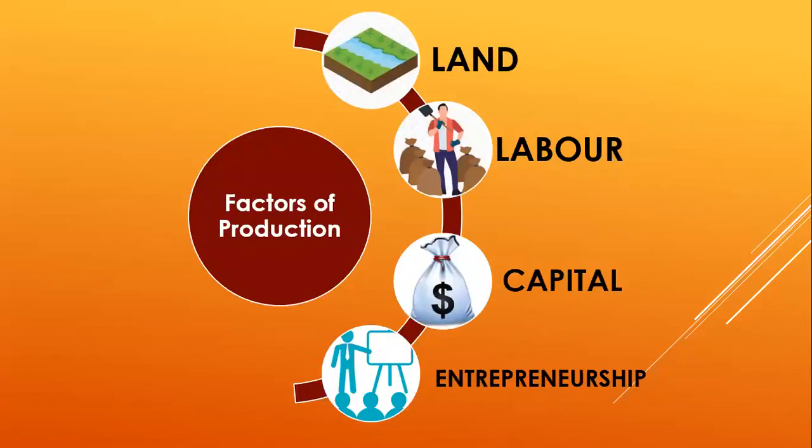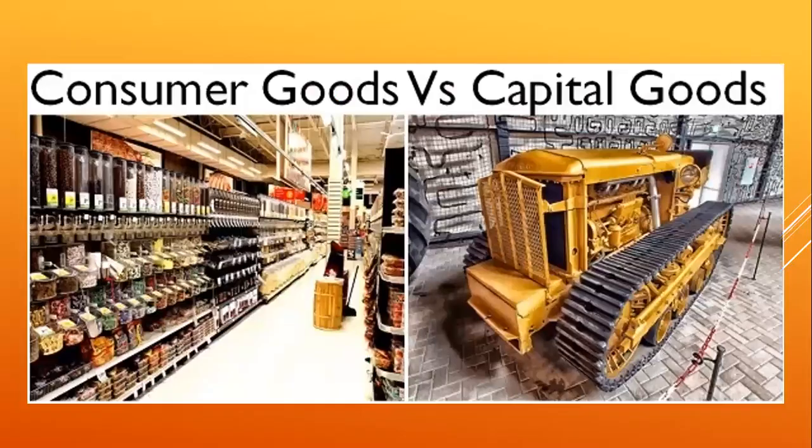When you are producing something, we have four factors of production: land, labor, capital, and entrepreneurship. Anything that we want to produce, we need these four things. Only then can we produce it.